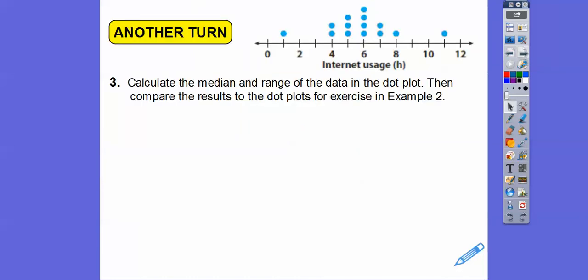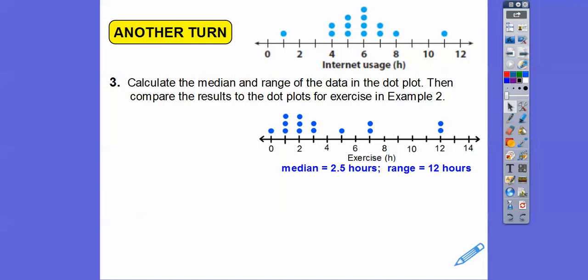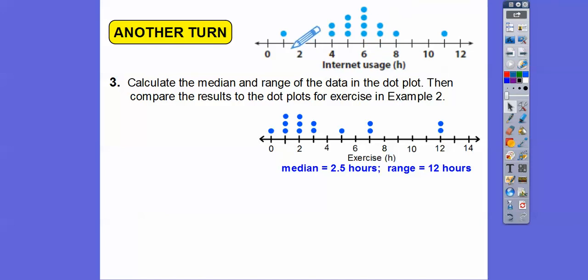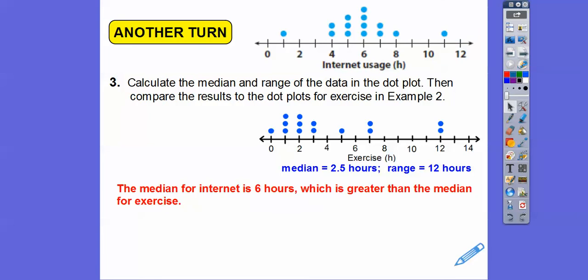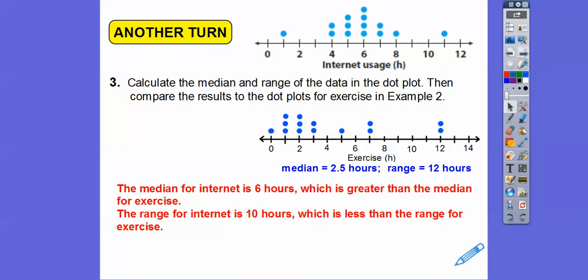Calculate the median and range from example two and compare. For the exercise dot plot we found the median to be 2.5 and the range to be 12. For the internet hours dot plot, counting 14 data points, the median falls at the 7th and 8th number — which lands at 6. The range goes from 1 up to 11, so the range is 10. The median for internet hours is 6, which is greater than the median for exercise, and the range for internet hours is 10, which is less than the range for exercise hours.